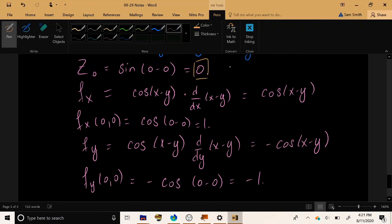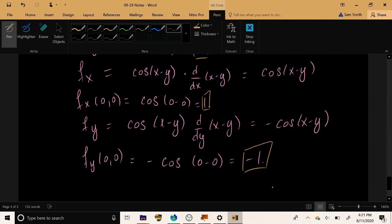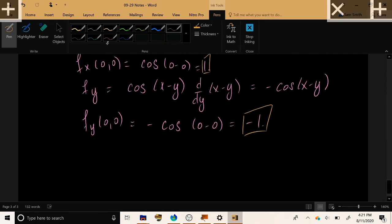So here are our key pieces. We have z naught, which is nothing. We have f sub x, which is 1. We have f sub y, which is minus 1. Okay, I'm running short on space.